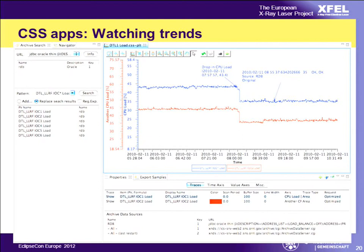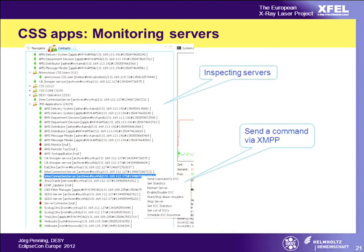We have a plugin which manages to display trends in graphical form. The whole system is backed by an archive system which allows you to retrieve data from different archive sources - there is an abstraction here for different archive sources which you can connect.